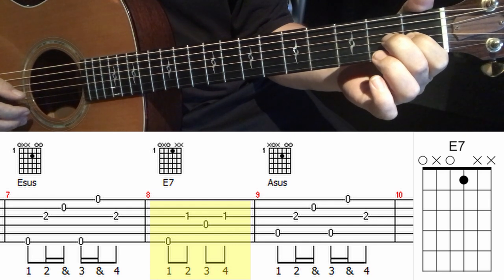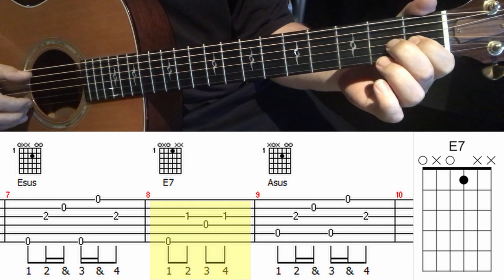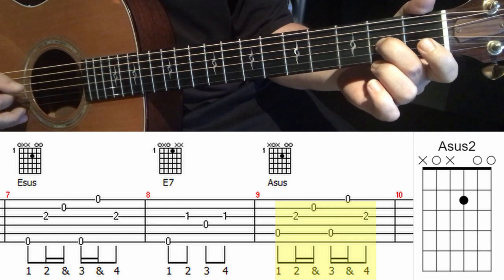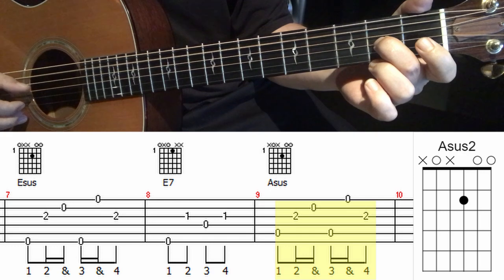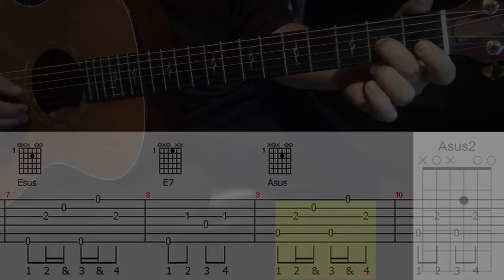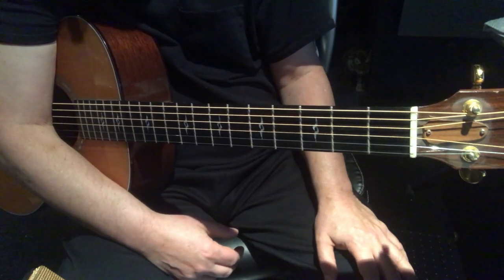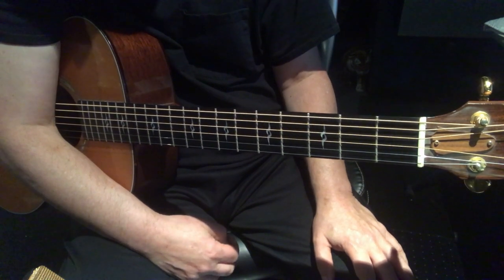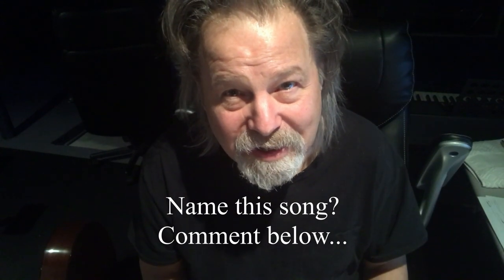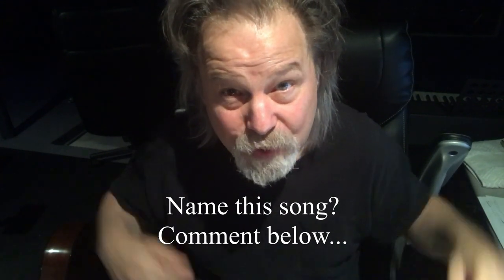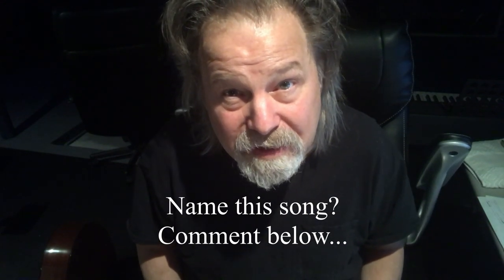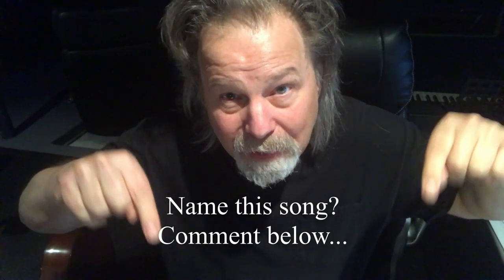And then we're back to measure nine. And we've played this measure already. One, and two, and three, and four, and. So that's pretty much the whole song. If you can play those measures, then you can play the whole song. Things just repeat back and forth. Looking for a title to this song? I don't have one yet. If you can comment below and give me your best title for this piece of music, let me know. Comment below.